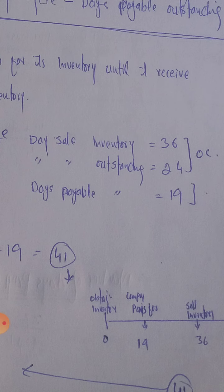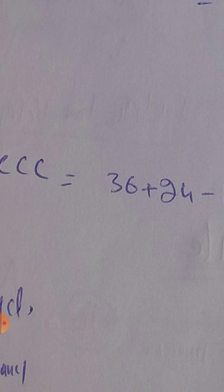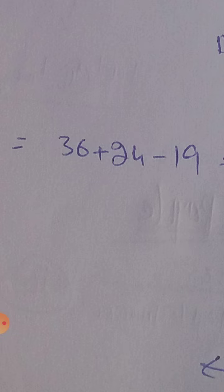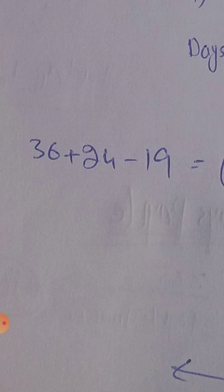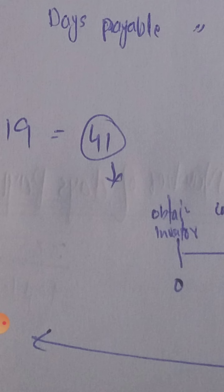When we deduct the payable outstanding from the operating cycle, it becomes the cash conversion cycle. So: Cash Conversion Cycle equals 36 plus 24 minus 19 equals 41 days. This means after 41 days the company is able to recycle its inventory — this is the net operating cycle of the company.